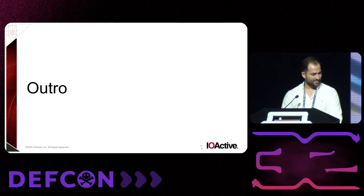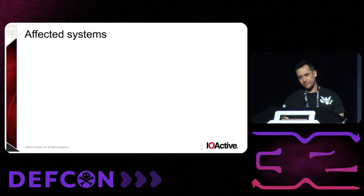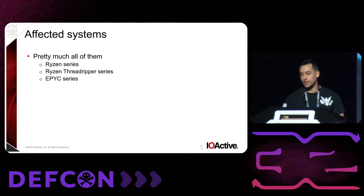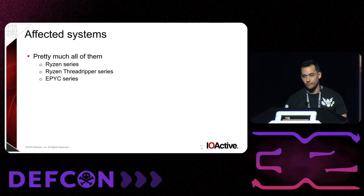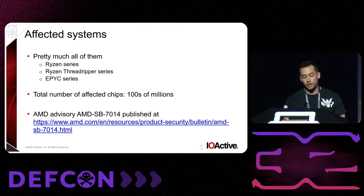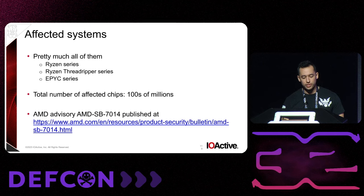In terms of affected systems — pretty much all of them. Our tests were on Ryzen, mostly several laptops, but the Threadripper series is also affected, and the EPYC series — meaning servers — is also affected. Due to the longevity of this feature, we can estimate the total number of affected chips is in the hundreds of millions. There is an advisory from AMD, published now, with more information on affected systems. A microcode update is available — information is there so you can check.